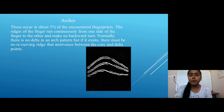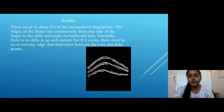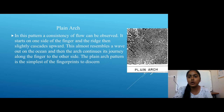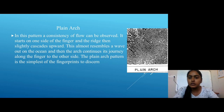There is no delta in an arch pattern, but if it exists, there must be a recurving ridge with that interval between the core and delta. The first subcategory of Arches is Plain Arch. In this pattern, a consistency of flow can be observed. It starts on one side of the finger and the ridge then slightly rises upward, almost resembling a wave, and then the arch continues its journey along the finger to the other side. The Plain Arch pattern is the simplest of the fingerprint types.